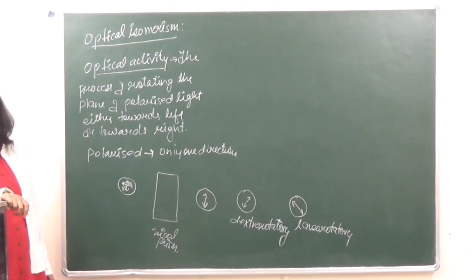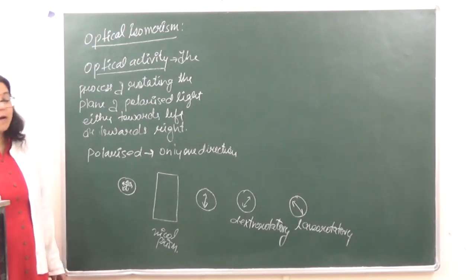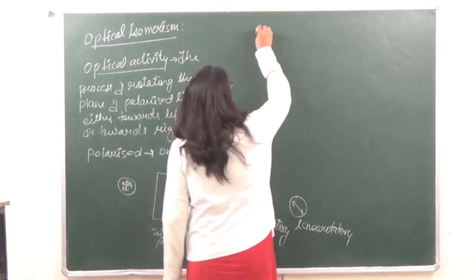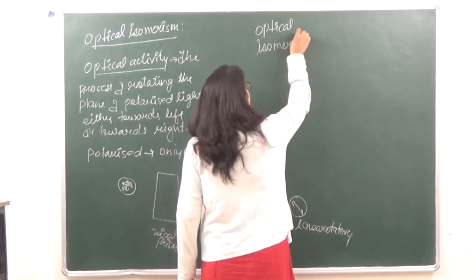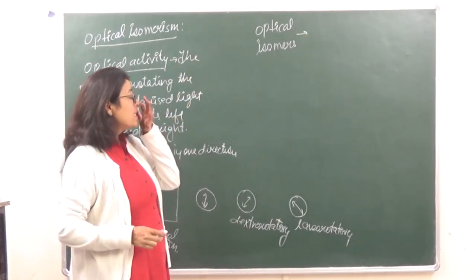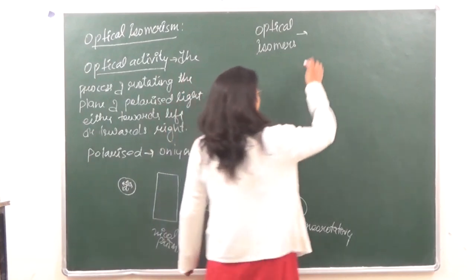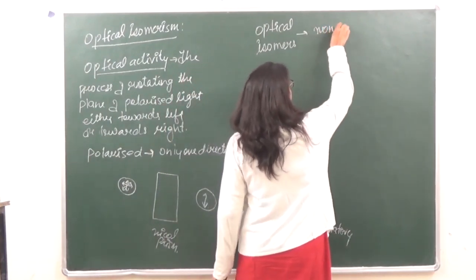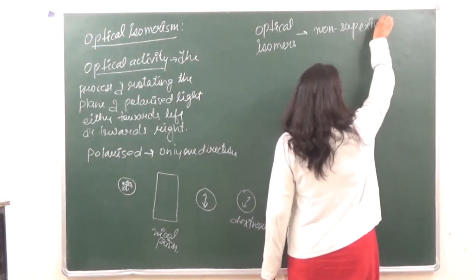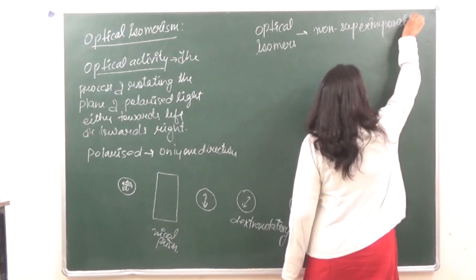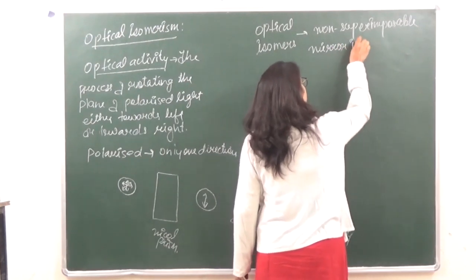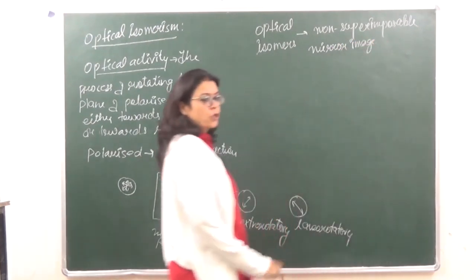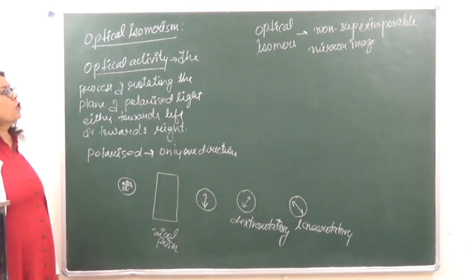When we talk about optical isomers, we say that optical isomers are non-superimposable mirror images of each other. Substances which are non-superimposable mirror images of each other are said to be optically active.